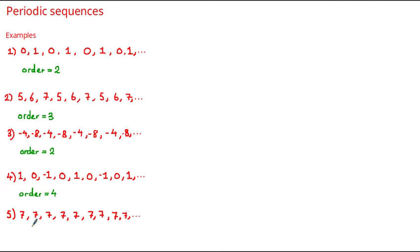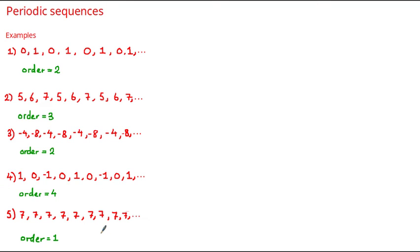Let's have a look at our last example. Here we have 7, 7, 7, and so on. Now this is called a constant sequence, but it's also a periodic sequence because this is a number sequence which has a repeating pattern, and that repeating pattern is after one term — the term 7 — and therefore the order is equal to 1. So a constant sequence will always be periodic and its order will always be equal to 1.